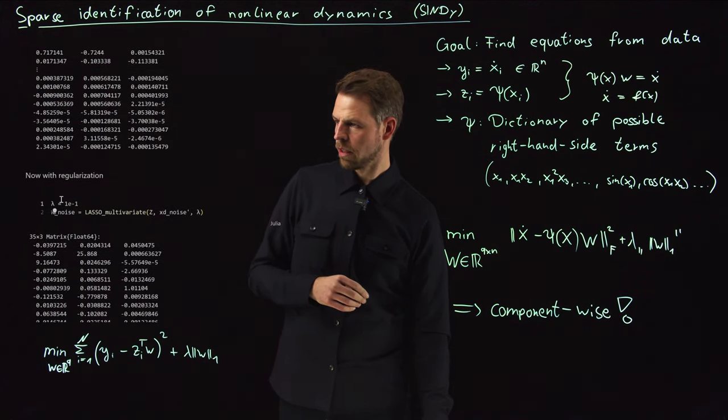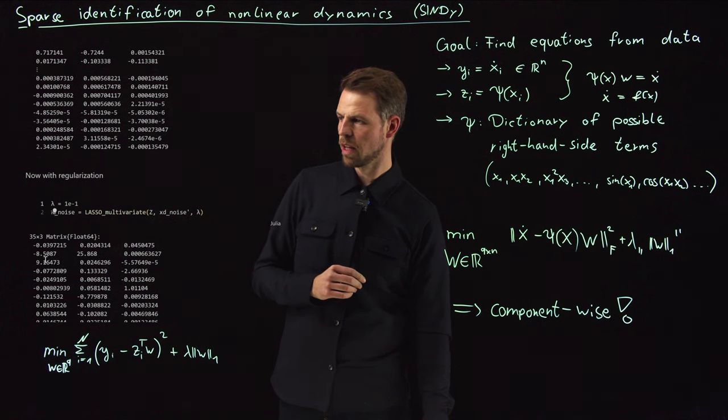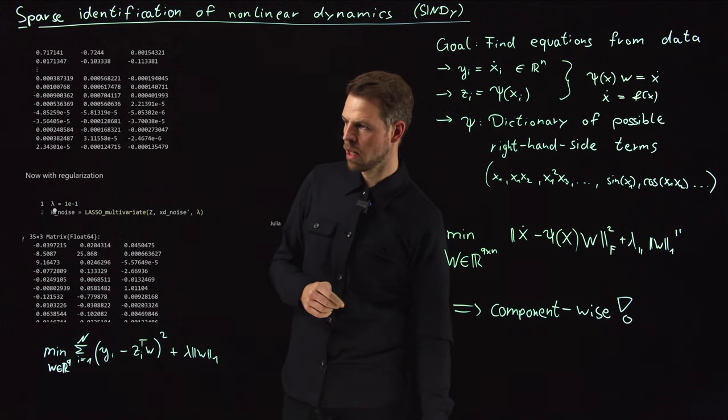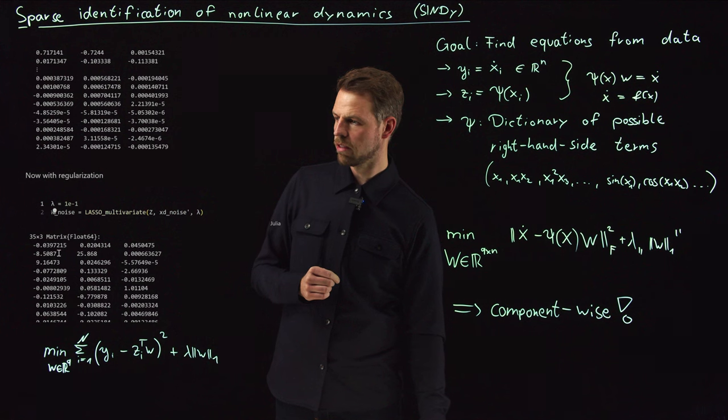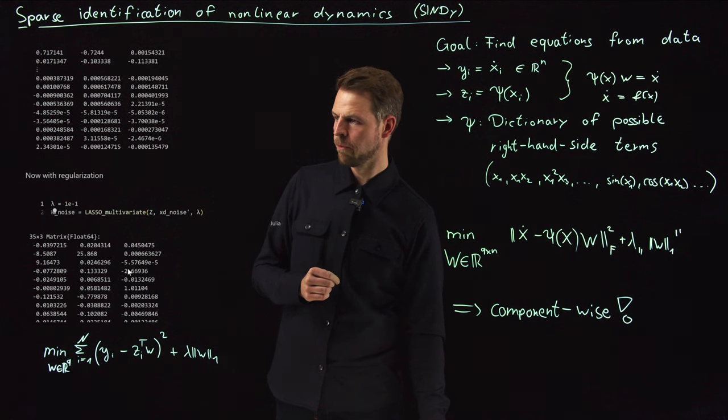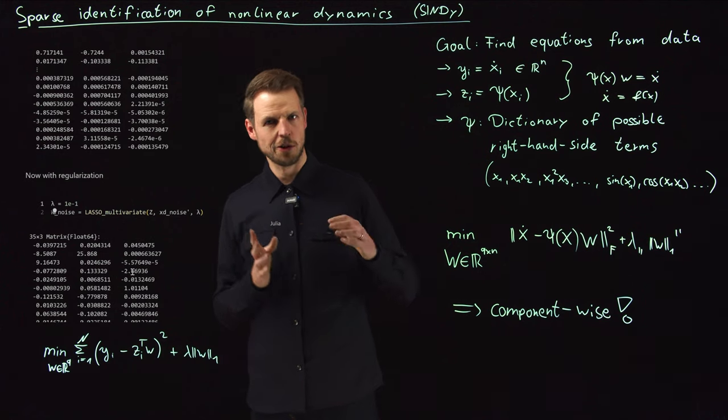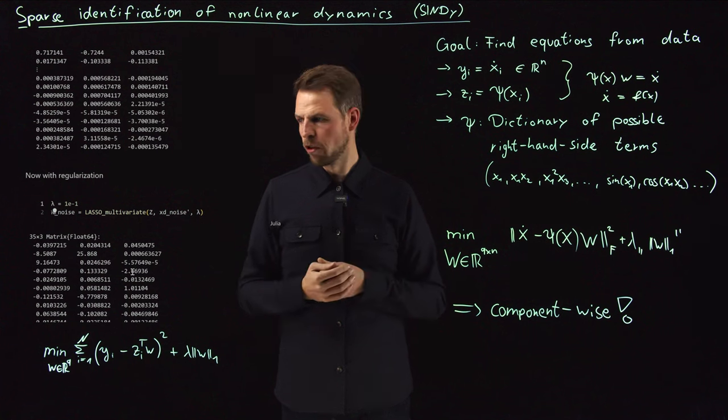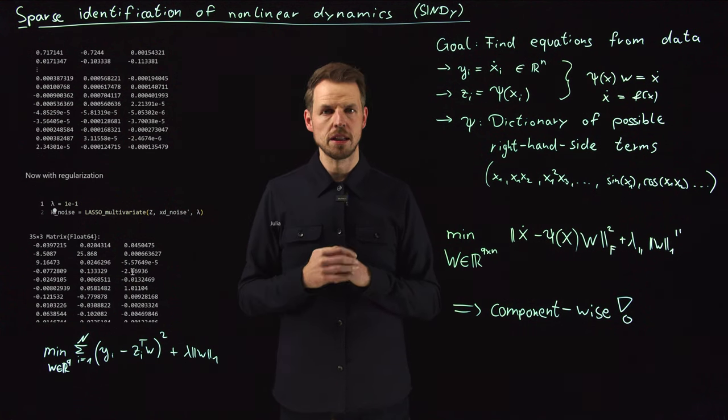Let's try to use the lasso algorithm with a certain threshold. You see that setting this lambda parameter to 0.1 gives me a nudge in the correct direction, but it's clearly not the correct solution. This is much closer to minus 10 and plus 10. This is much closer to 28. This is close to minus 8 over 3. I have taken this to the correct direction, but it's still not perfect and certainly not sparse because I have many non-zero values.